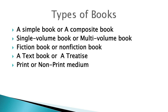Now we come to book types. Books are an important source of information and libraries acquire them based on the needs of the user. Based on content, a book may be a simple book or a composite book, a single-volume or multi-volume book, fiction or non-fiction, or a textbook or a treatise. Based on physical format, a book may be in print or non-print medium. Books in non-print medium include audio books, video books, multimedia books, and e-books.